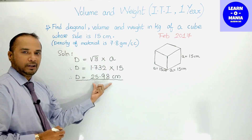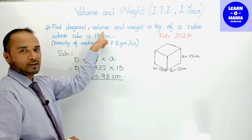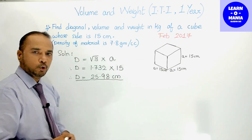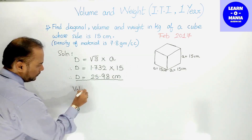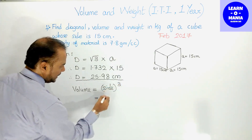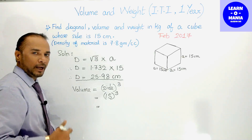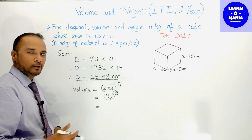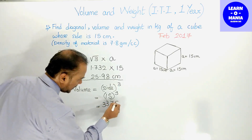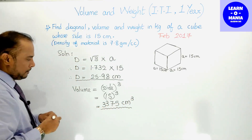Now let us find out volume। Volume का formula cube के लिए होता है: volume = side³। Side है 15, तो 15³ = 15 × 15 = 225, और 225 × 15 = 3375 cm³। यह है second part का answer, volume।